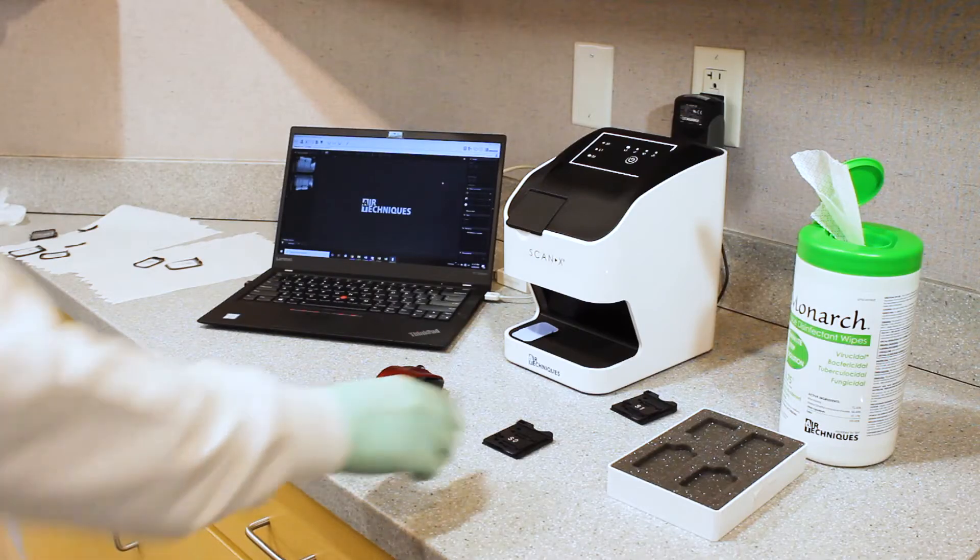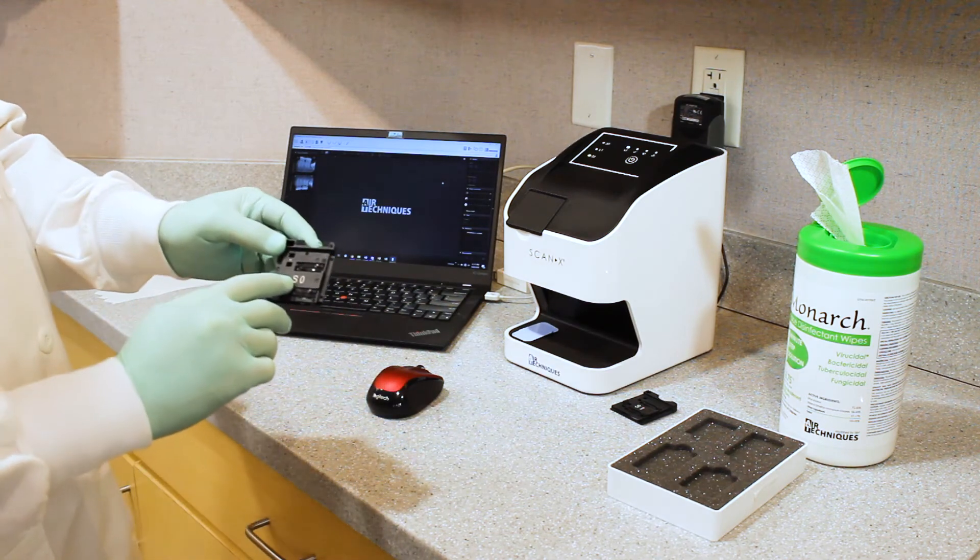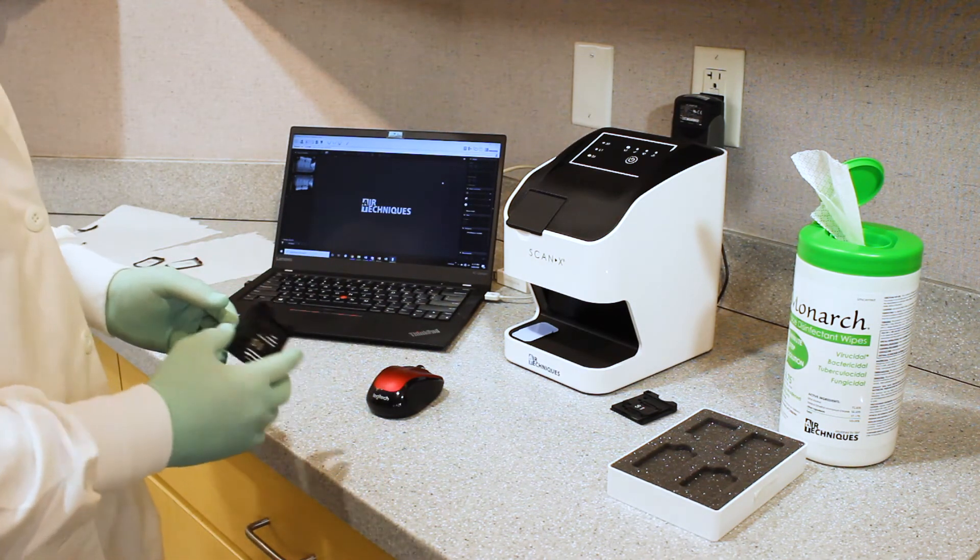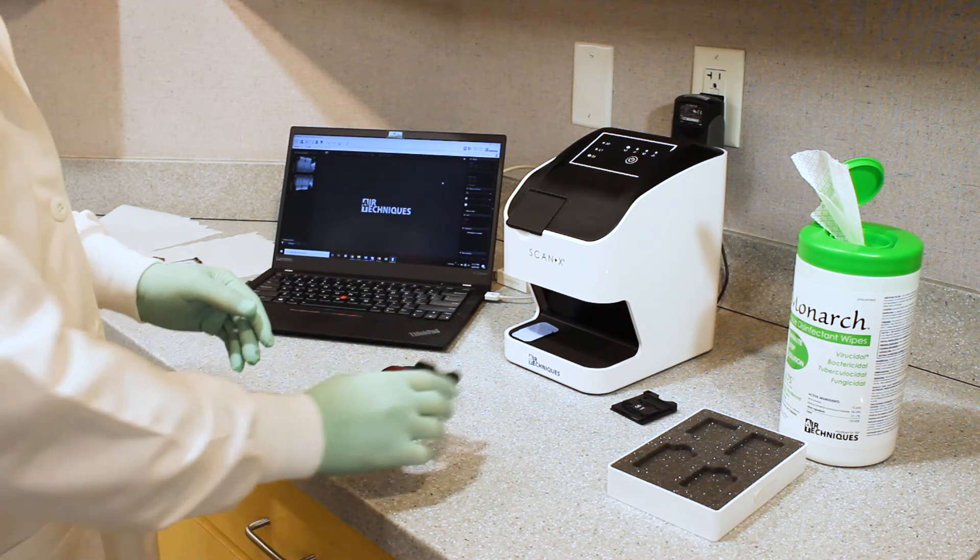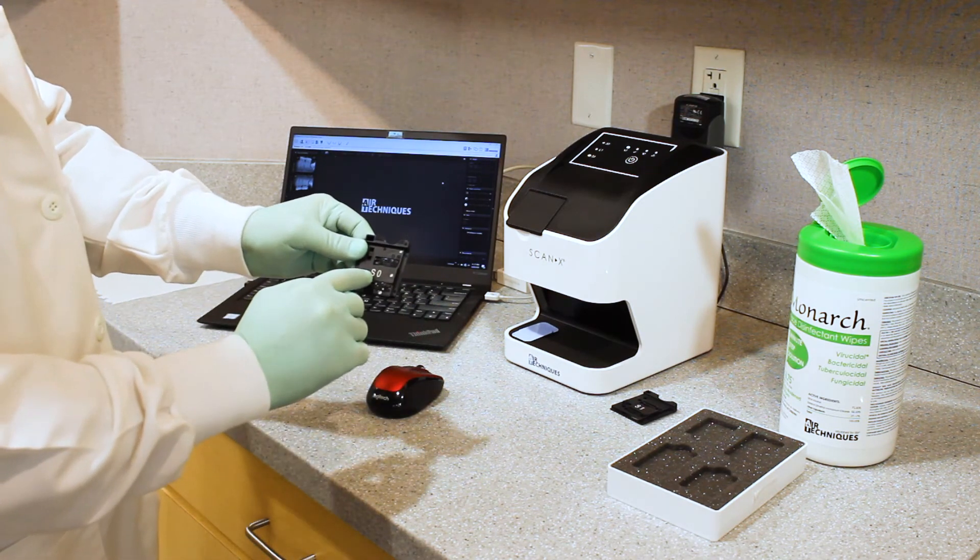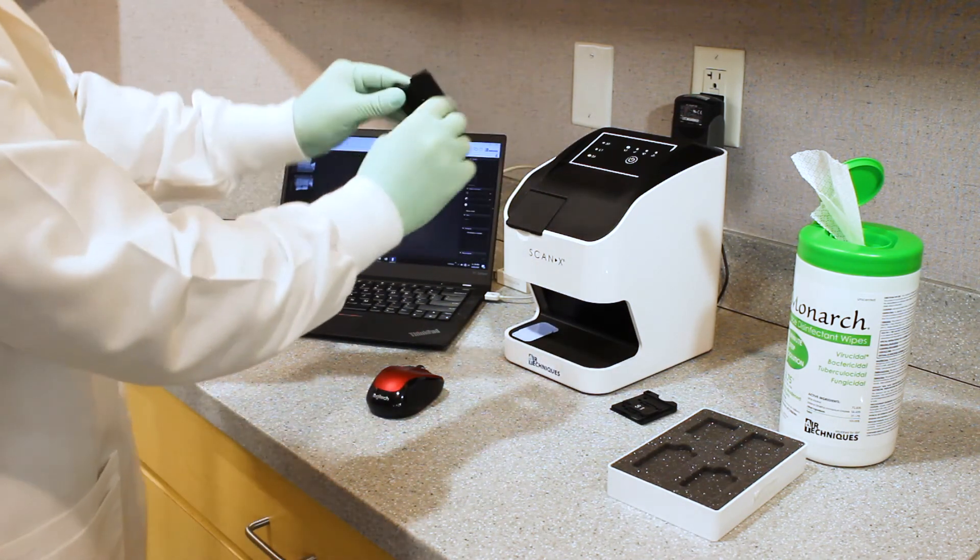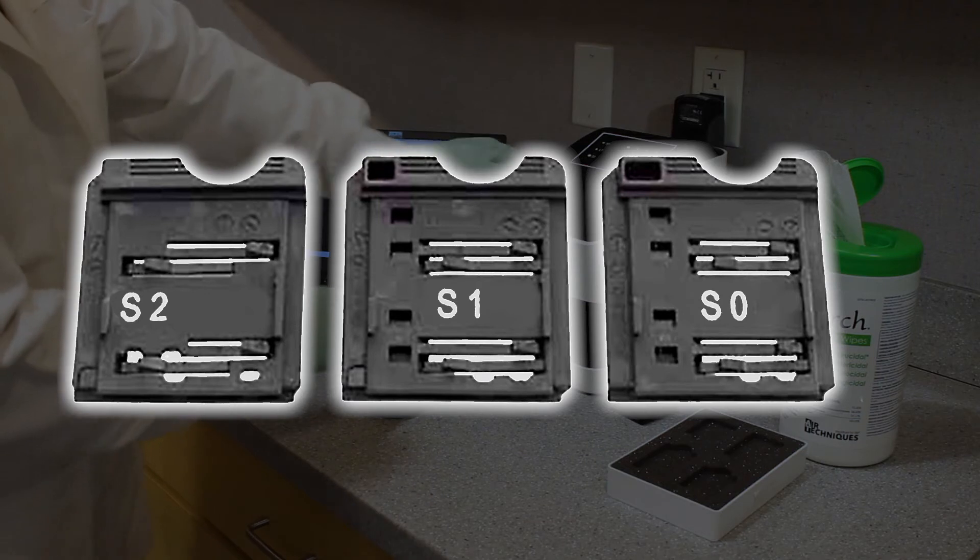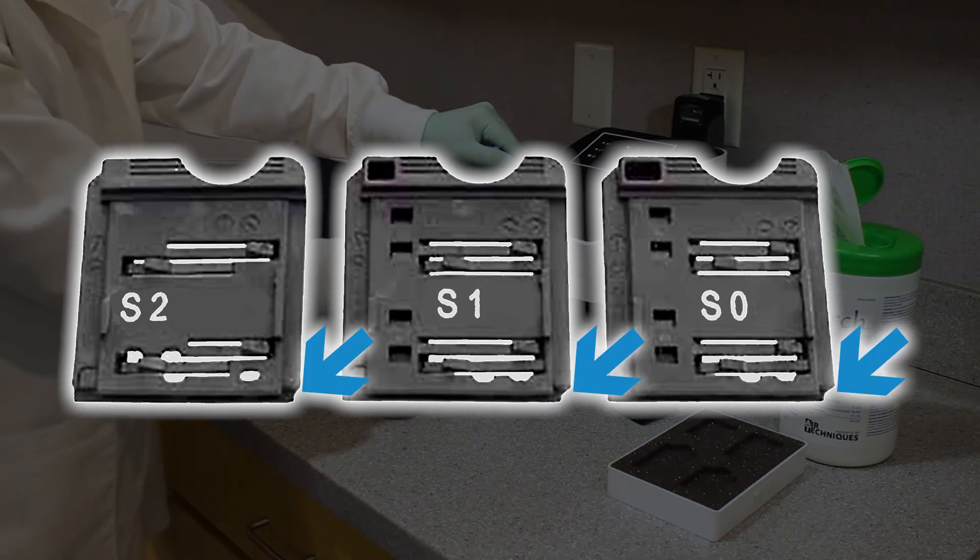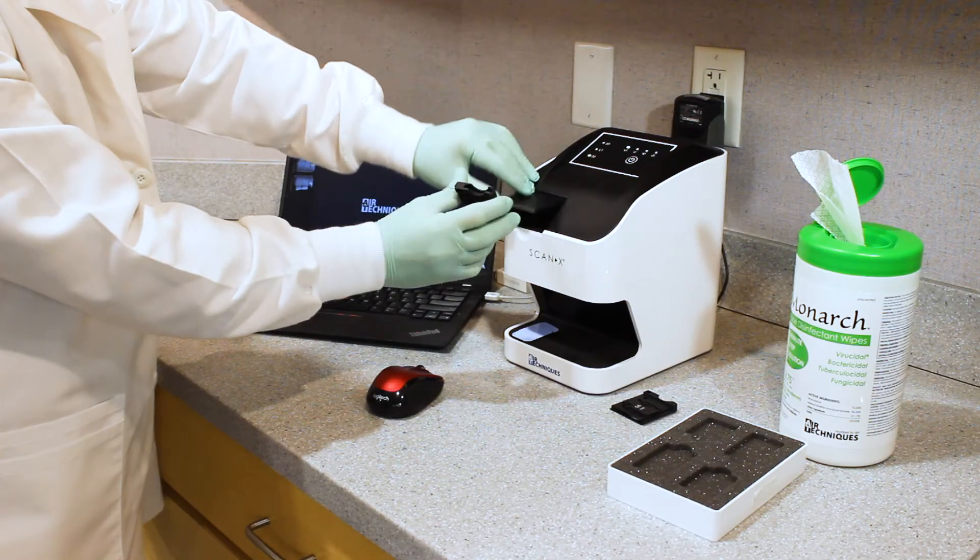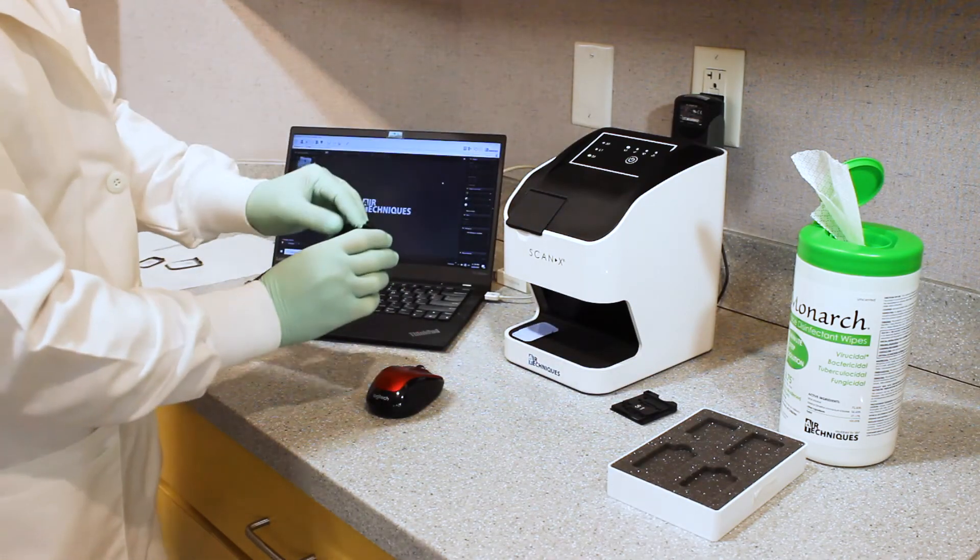For the next part, we're going to talk about inserting a size zero cartridge to allow us to scan a size zero phosphorus storage plate. So essentially, the size number is always going to face you as the user. So it goes in this way, it does not go in this way. And it is keyed so you can see which is the correct orientation, meaning we have steps on this side where it's a straight wall on that side indicating it's only going to go in one orientation.